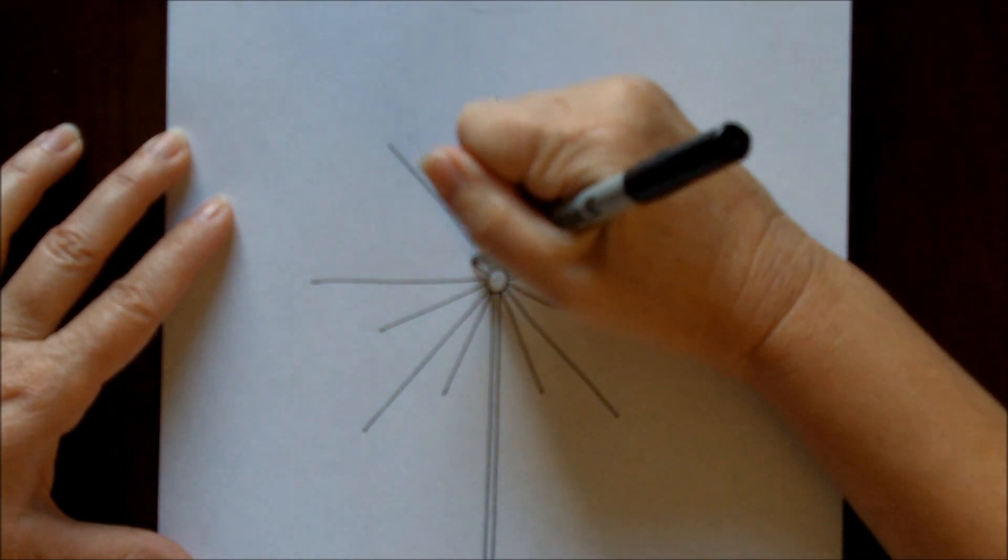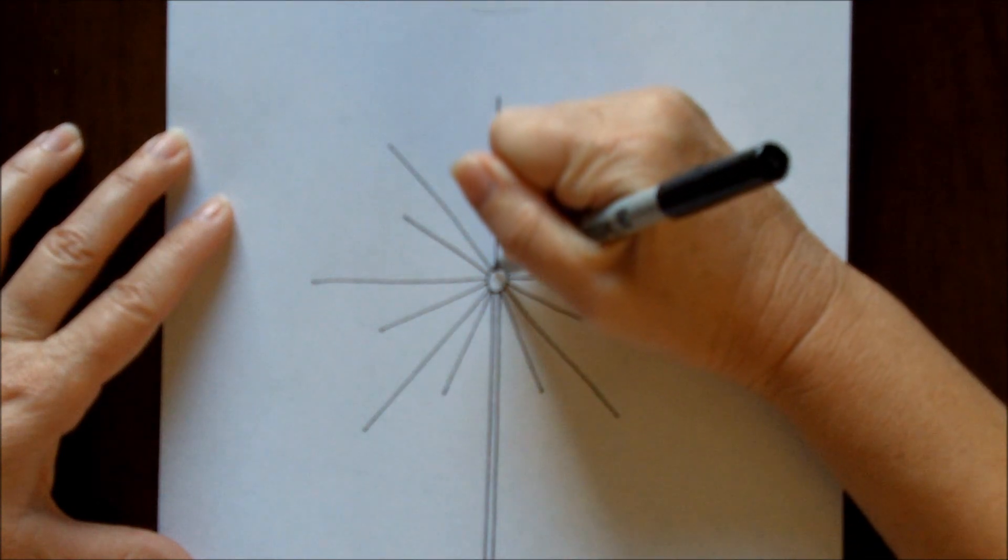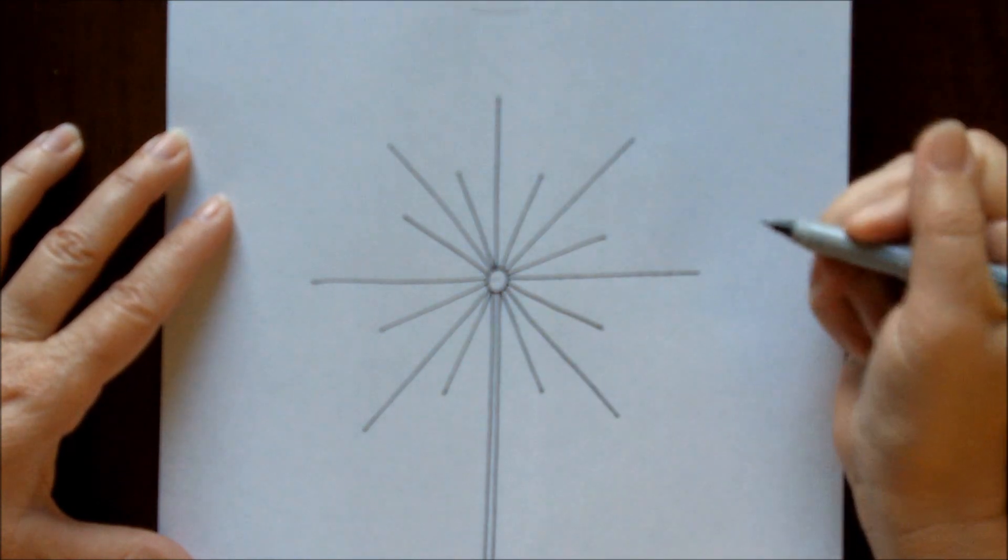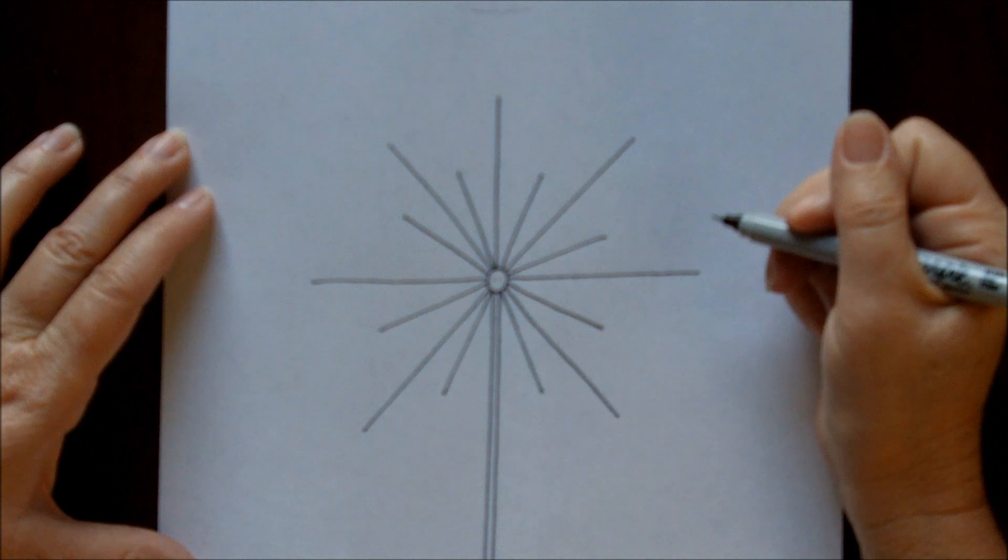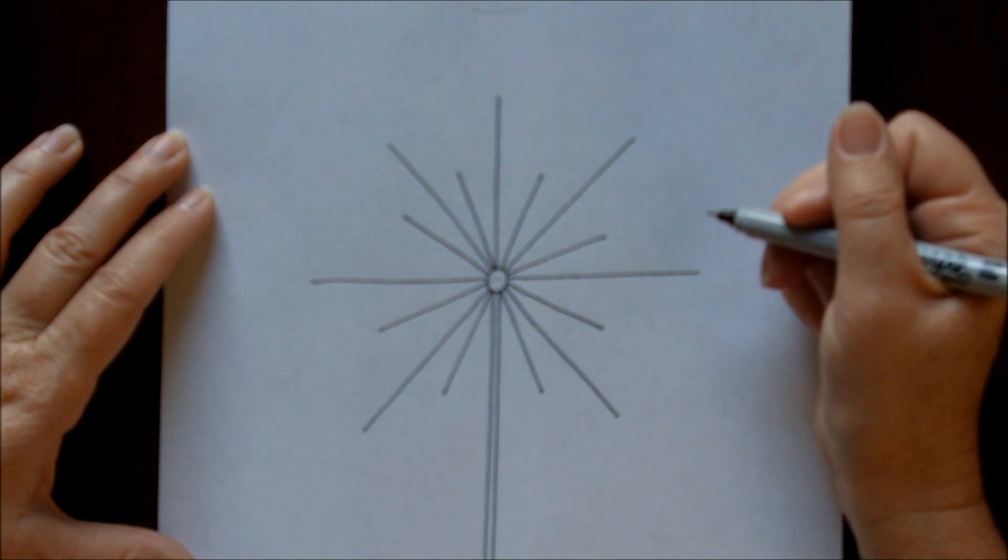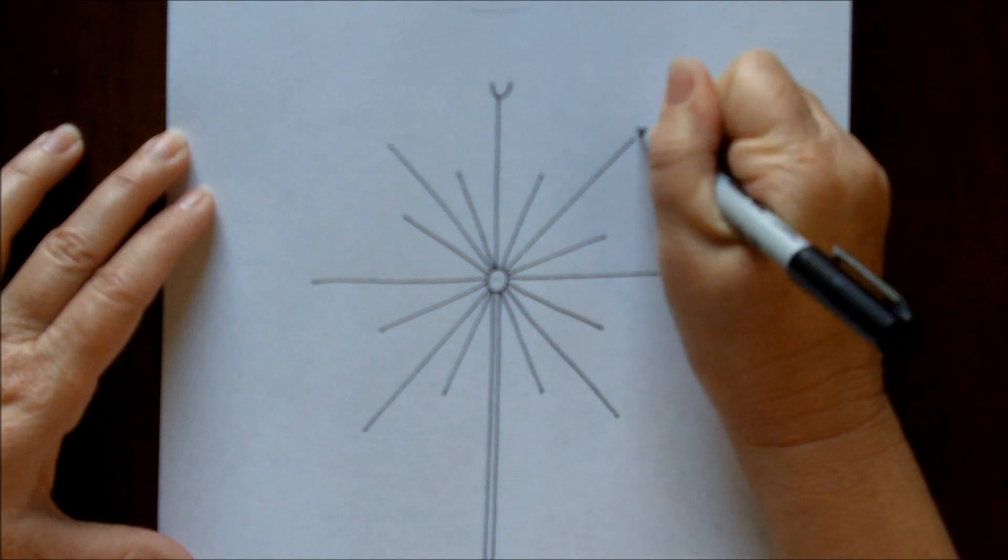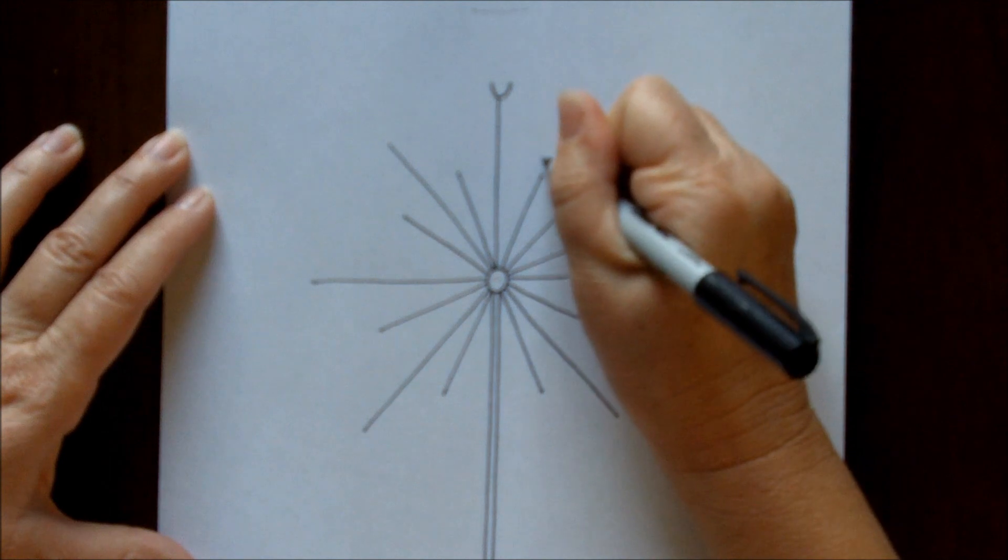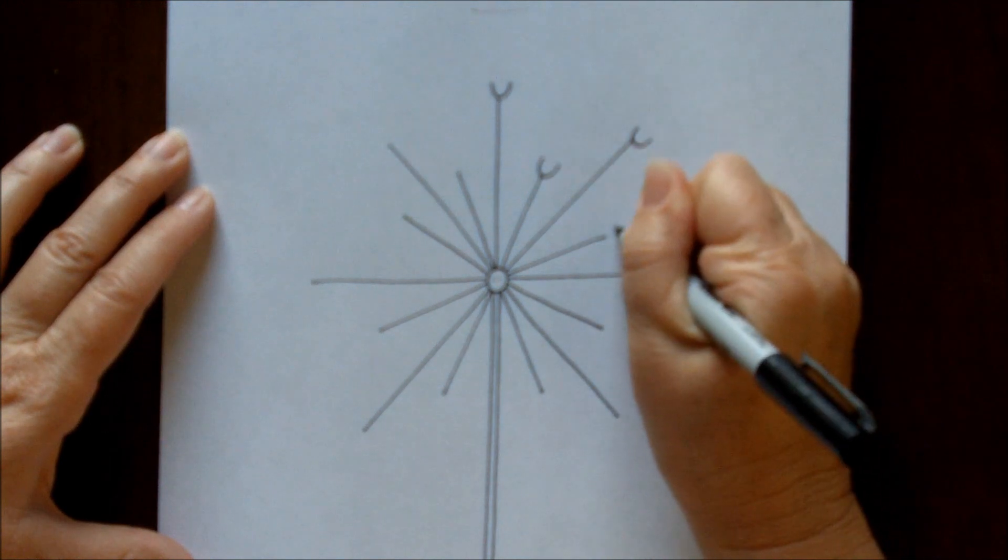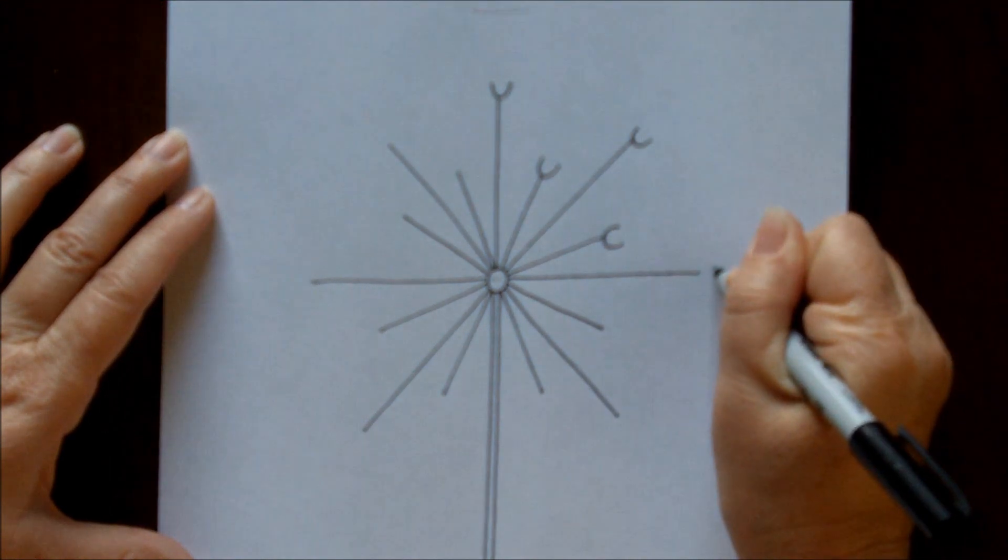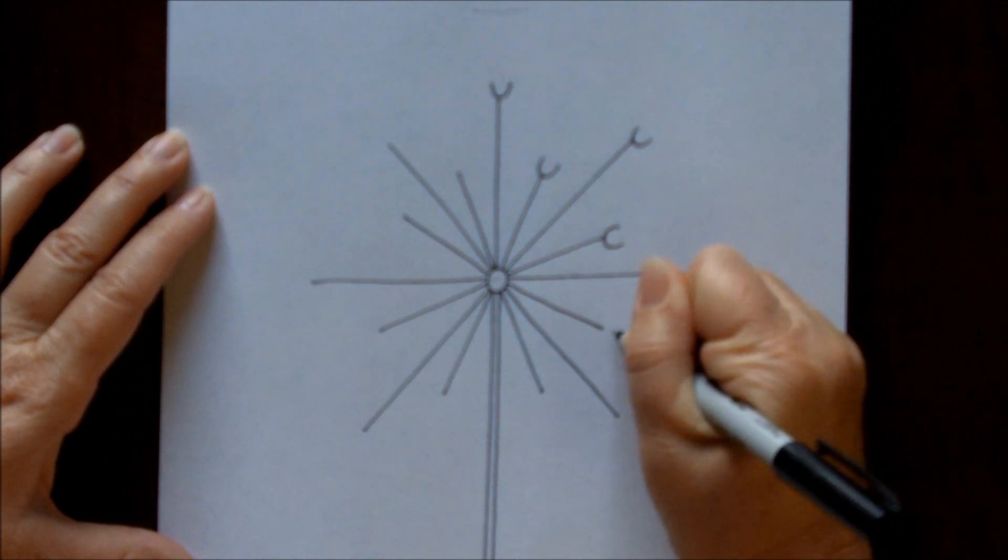Now we're going to put the little detail, the little umbrella things at the top. So what you're going to do for that is make the letter U on the top of each one, each little line.